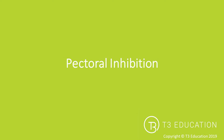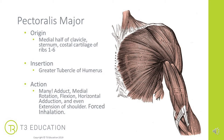Kinesiology taping for pectoral inhibition. Pectoralis major originates on the medial half of the clavicle, down the sternum and the costal cartilage of ribs one to six. It inserts onto the greater tubercle of the humerus. Its actions span many different fibers in different directions — including adduction, medial rotation, flexion, horizontal adduction, and even extension of the shoulder.